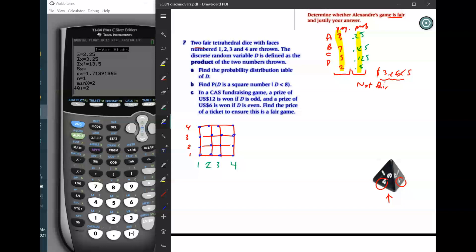Find the probability distribution table of D. So D, remember, is not the combination of one, one, one, two, et cetera. It is the product of the two numbers shown. So to see what the product is, I'm going to make another table similar to this, except for I am going to actually write the products instead. So I'm going to rewrite this table and I'm going to put the products in here. So one times one is one. One times two is two. Et cetera. Two, four, six, eight. Three, six, nine, twelve. And four, eight, twelve, sixteen. So these are the values for D.